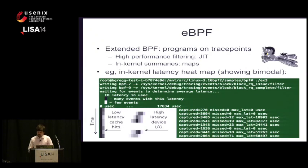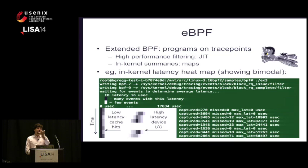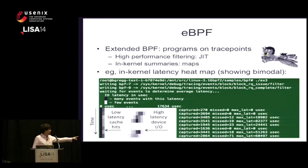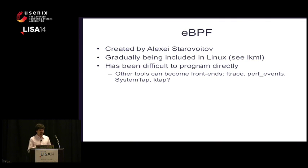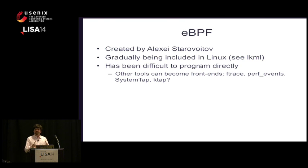The last technology I want to mention is eBPF — extended BPF. It does high-performance filtering, JIT for instrumentation, and provides in-kernel summaries and maps, so we can do what DTrace would do a lot: aggregations that produce a custom efficient summary in-kernel before putting data out to user space. There's an example of a heat map on its side showing a band of low-latency cache hits, high-latency device IO, and a multi-mode heat map. eBPF is gradually being included in Linux — it's been difficult to program directly, so it needs a front-end tool like ftrace, perf events, or SystemTap, which will follow once the backend engine is integrated.